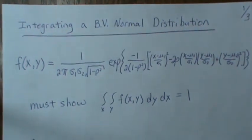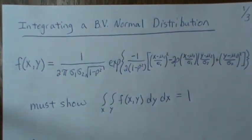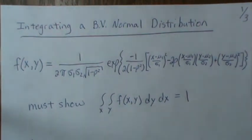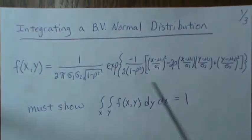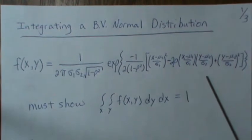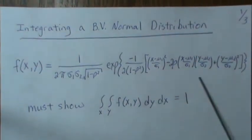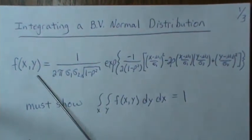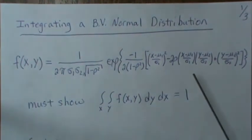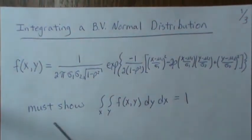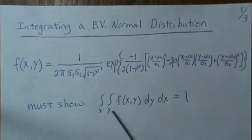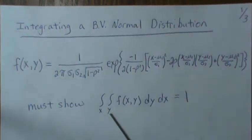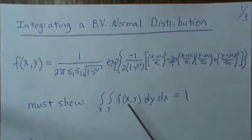In this video we're going to show that the bivariate normal is a density and integrates to 1. Here's the density — I have another video that shows how to derive it — and in this video we want to show that it integrates to 1. We have to integrate it over both x and y, and each of those go from negative infinity to positive infinity.